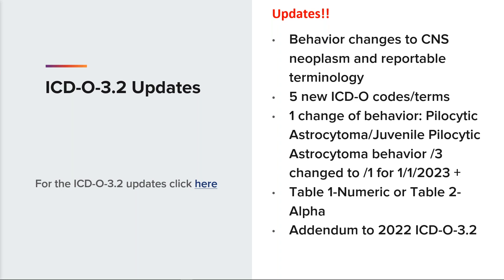Beginning January 1, 2023, all cases diagnosed with pilocytic astrocytoma or juvenile pilocytic astrocytoma are to be reported as behavior 1. They will no longer be collected with malignant behavior 3. The ICD-O code 9421 behavior 3 will be valid for diagnosis of high grade astrocytoma with piloid features, or high GAP. Coding instructions are included in the remarks section. At the NACER site, you will find both Table 1 for the numeric listing, Table 2 for the alpha listing, and an addendum to the 2022 ICD-O 3.2, all available for download.